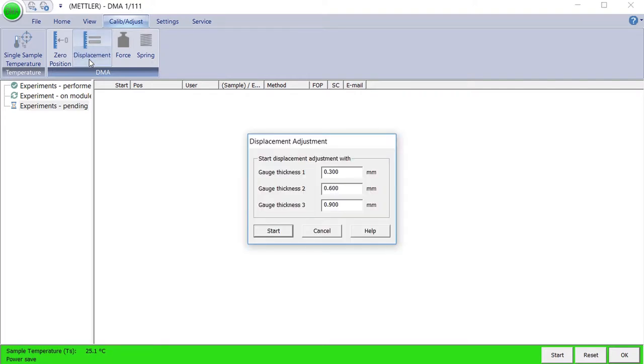A Displacement Adjustment dialog box appears. Enter the correct thickness value of each gauge block in the appropriate box. Then click Start.